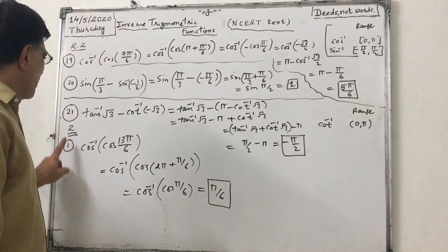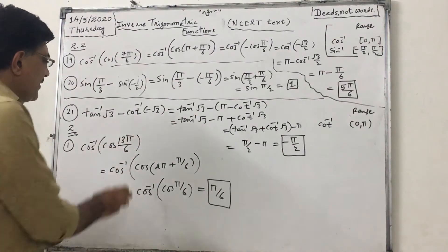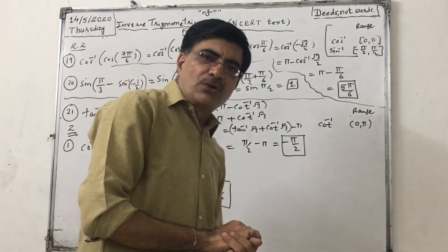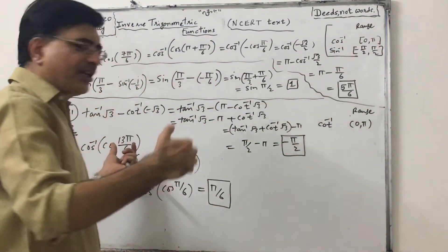Now exercise 2 problem 1. Cos inverse of cos 13π by 6. Again this 13π by 6 is out of range of cos inverse. The range of cos inverse is 0 to π, so this is out of range of cos inverse.